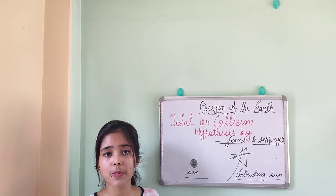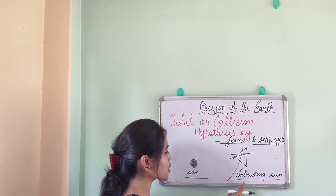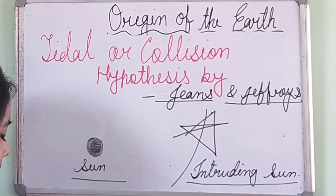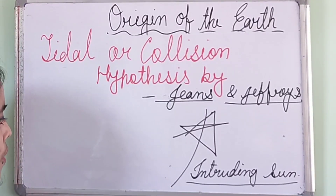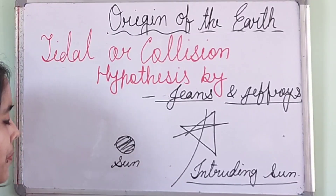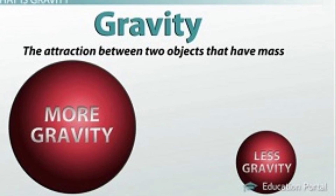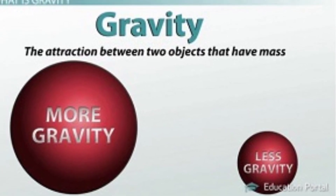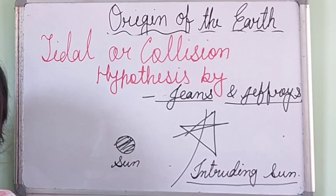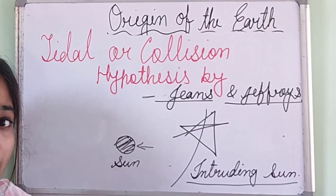In the planetesimal theory, the second body was a passing star. Here, it is an intruding sun. Accidentally, this intruding sun came very close to our original sun. As we know, when an object has more mass and weight, its gravitational attraction is also greater. So this intruding sun exerted a huge gravitational pull on the surface of the original sun because they were very close to each other.